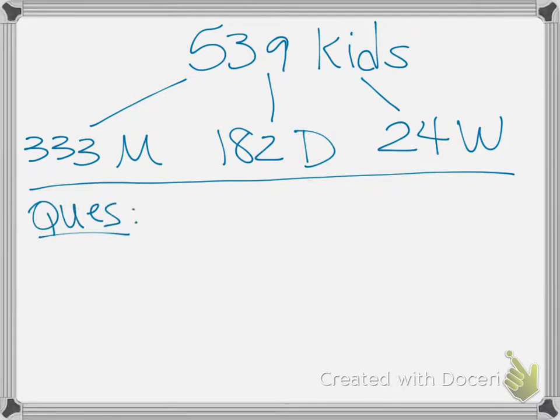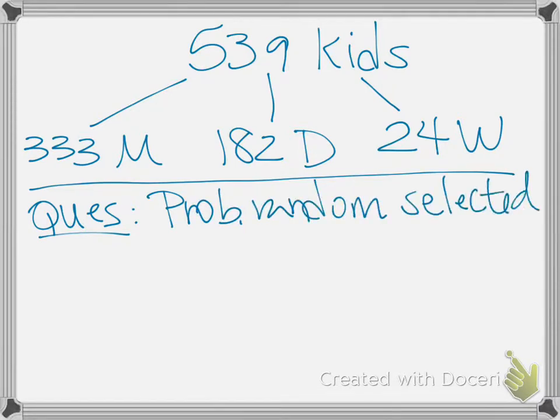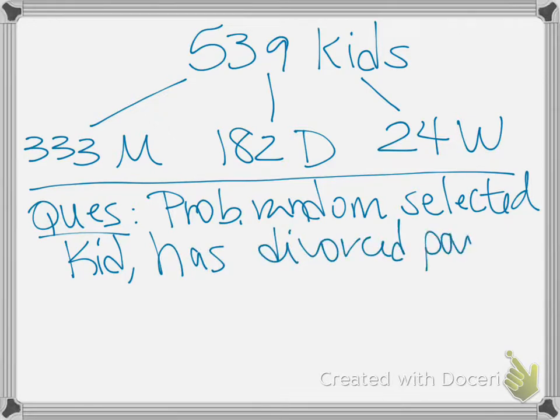So then the question that we're going to look at is we're trying to find the probability that a randomly selected kid has divorced parents. That's what we're trying to figure out.